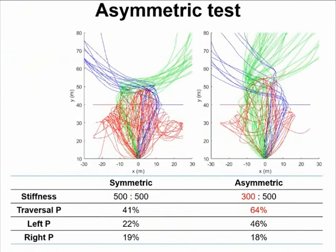To test this hypothesis, I compare the trajectory distribution in the asymmetric test with the symmetric one. So here in this test, the left beam stiffness is set to be lower than the right beam. And you can see the overall traversal probability is increased. And notice that the increased part of the probability mostly comes from the left trails, while the number of the right trails is almost unchanged.